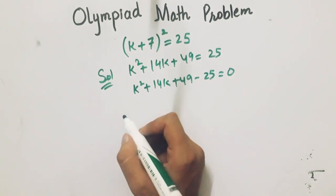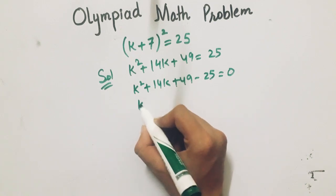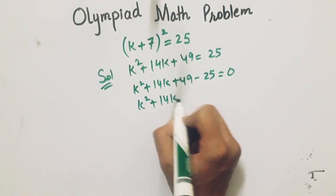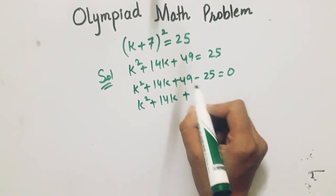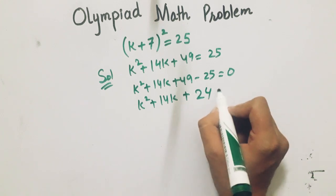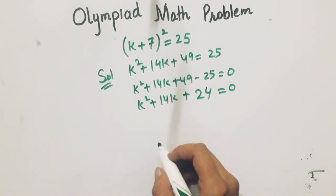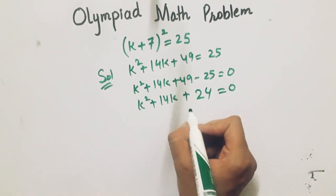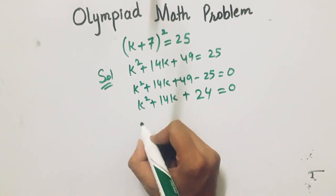It means that x squared plus 14x plus 24 equals 0. Now find the factors of 24 which when added give 14.